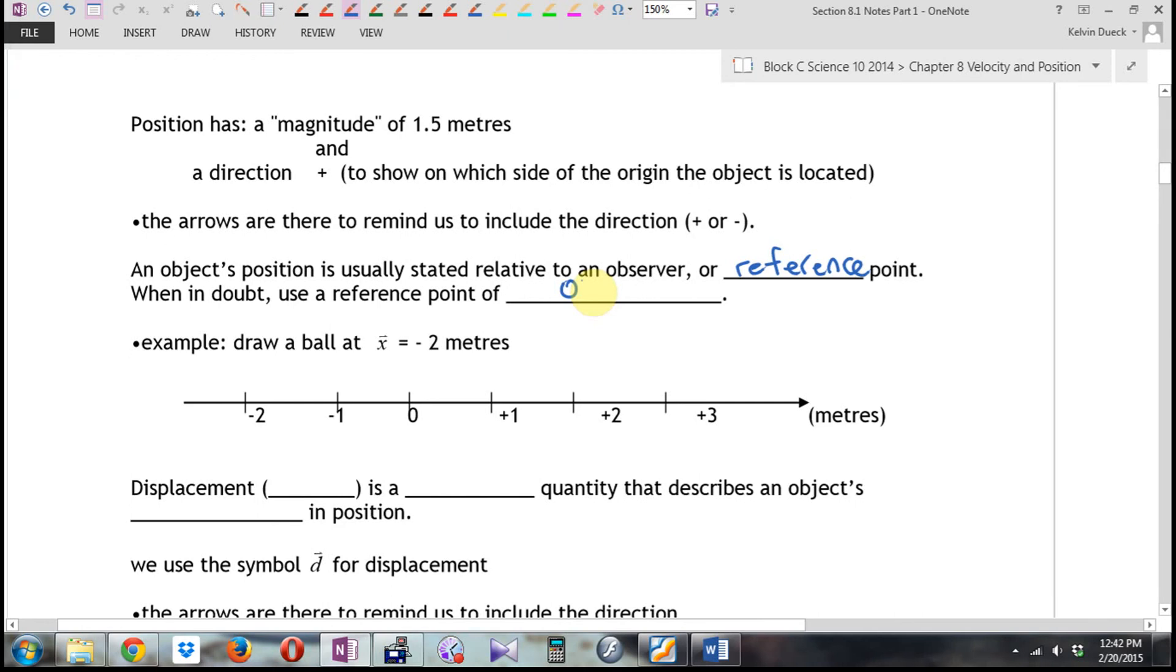This position has a magnitude of 1.5 meters and a direction, positive, to show us on which side of the origin the object is located. An object, the arrows are there to remind us to include the direction, positive or negative. An object's position is usually stated relative to an observer or reference point. When in doubt, unless they say different, use a reference point of zero. Example, draw a little ball at a position of negative two meters on that little picture there. By saying that, it's fairly obvious now, that all of us will be drawing the same thing in the same location. Here's my origin. What would negative two meters mean? Go which direction? A little ball right there. You can color it in if you want to, but there is a position vector of negative two meters.